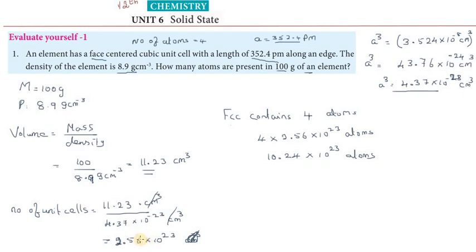One unit cell, 4 atoms, and the total is 10.24 into 10 to the power 23 atoms. Thank you friends.